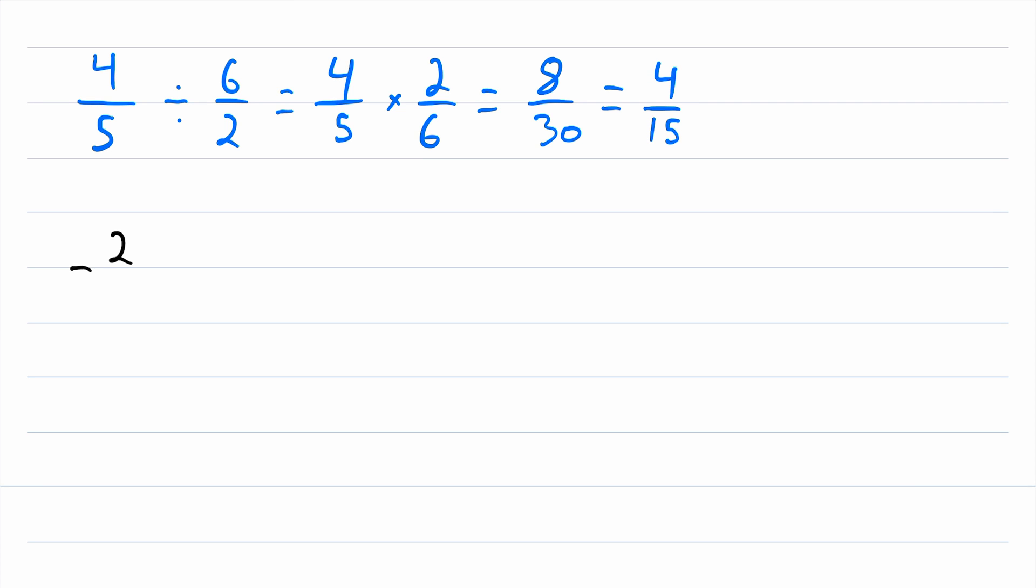One more example, let's say we have negative 2 over 3 divided by 7 over 2. Dividing negative 2 thirds by 7 halves is the same as multiplying negative 2 thirds by the reciprocal of 7 halves. So this is equal to negative 2 over 3 multiplied by the reciprocal of 7 over 2, which is 2 over 7. And then this is equal to negative 4 over 21.